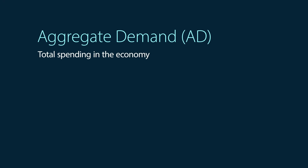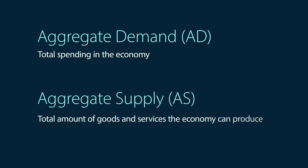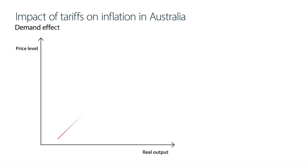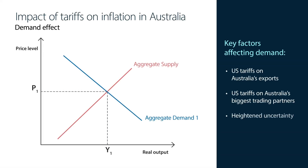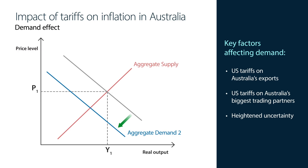We've talked about the impact of tariffs on economic activity. But what about the effect on inflation, like in Australia? To understand this, we need to look at both aggregate demand as well as aggregate supply, which shows the total amount of goods and services the economy can produce. Tariffs on exports from Australia and on our biggest trading partners, along with heightened uncertainty, can cause aggregate demand to fall. This puts downward pressure on prices across a range of goods and services and leads to lower inflation.